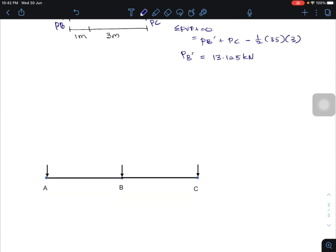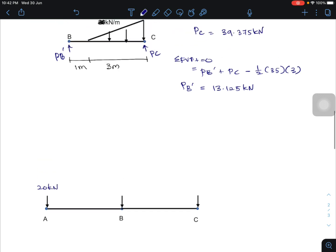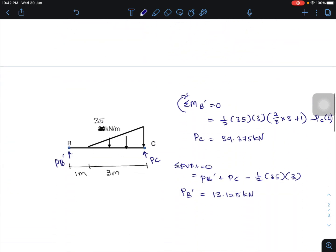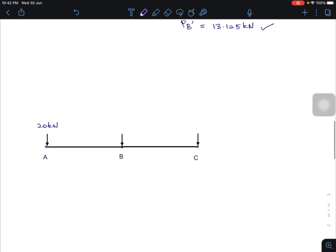So at A becomes 20 kN. At B is this PB, 20 kN plus PB prime. 20 kN plus 13.125 kN becomes 33.125 kN. At C is 39.375 kN.